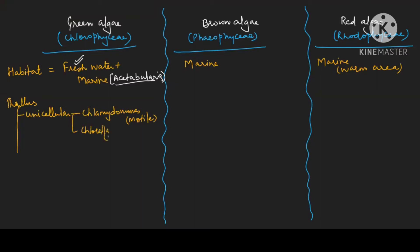Chlorella is a non-motile unicellular example. All these examples are from your NCERT, but they are not placed in the plant kingdom. The Chlorella example is given in NCERT in the economic importance of algae section — one paragraph above the green algae section.